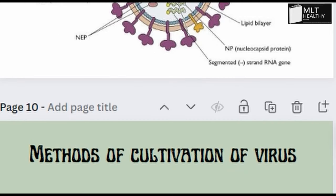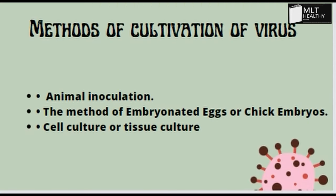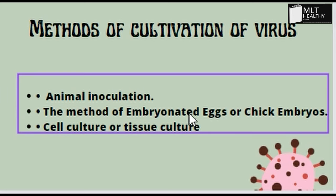Methods of cultivation of virus — there are mainly three methods: first, inoculation using embryonated eggs or chick embryos; second, cell culture or tissue culture. That is also known.